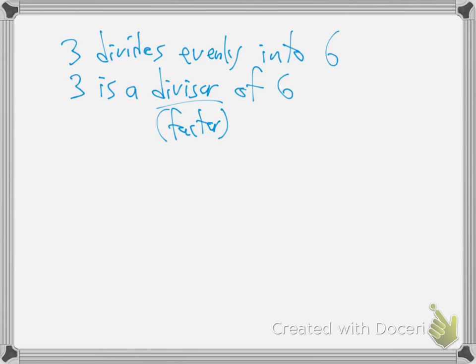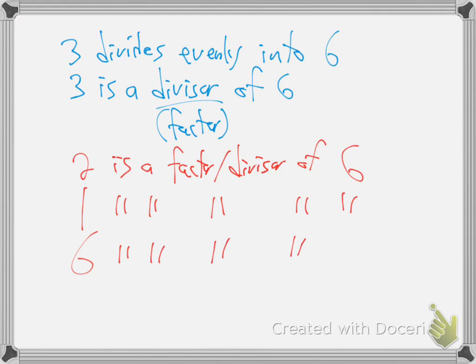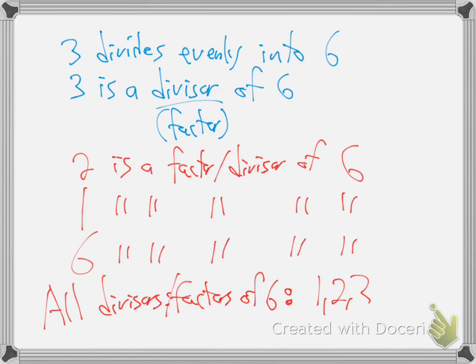We also call it a factor. It's the same thing. They're synonyms. They mean exactly the same thing. Three is a factor of six. Three is a divisor of six. It means it divides in evenly. What else is a divisor of six? What else goes into six evenly? Two is a factor slash divisor of six. What else is a factor slash divisor of six? One and six, right? One is a factor of six. And six itself is a factor of six. Those are all the divisors, all the factors of six.